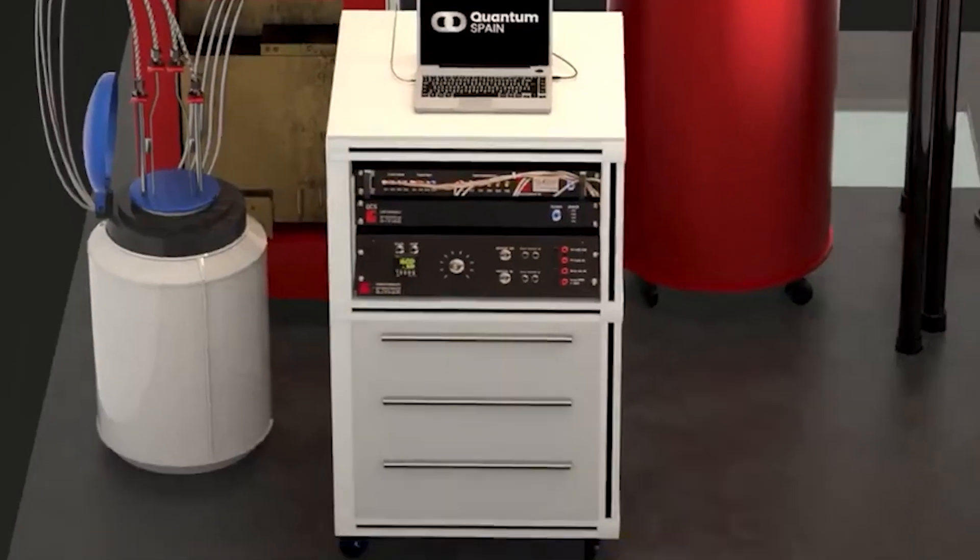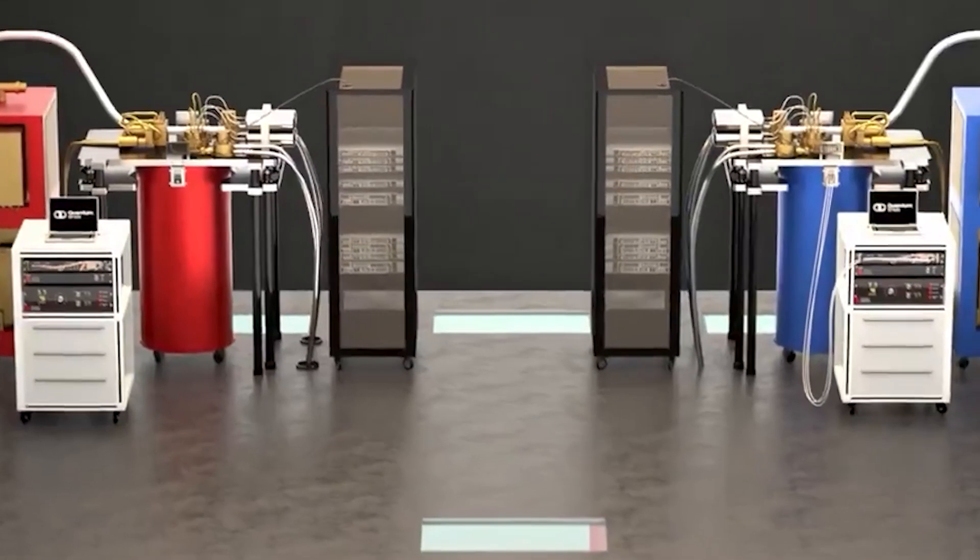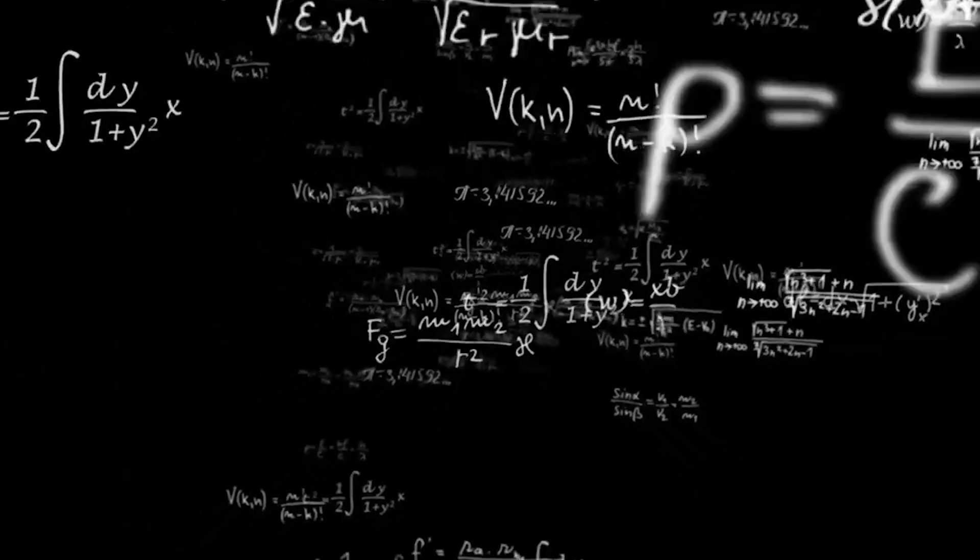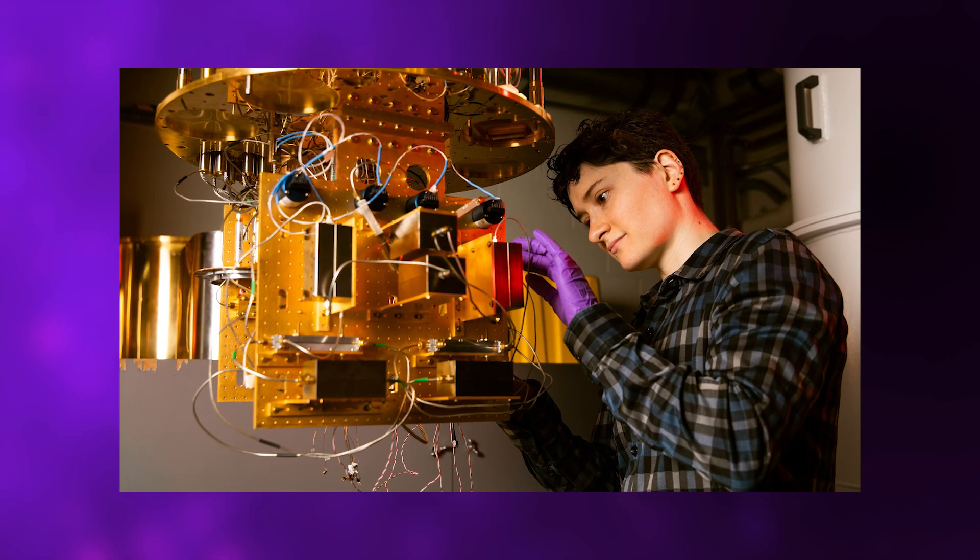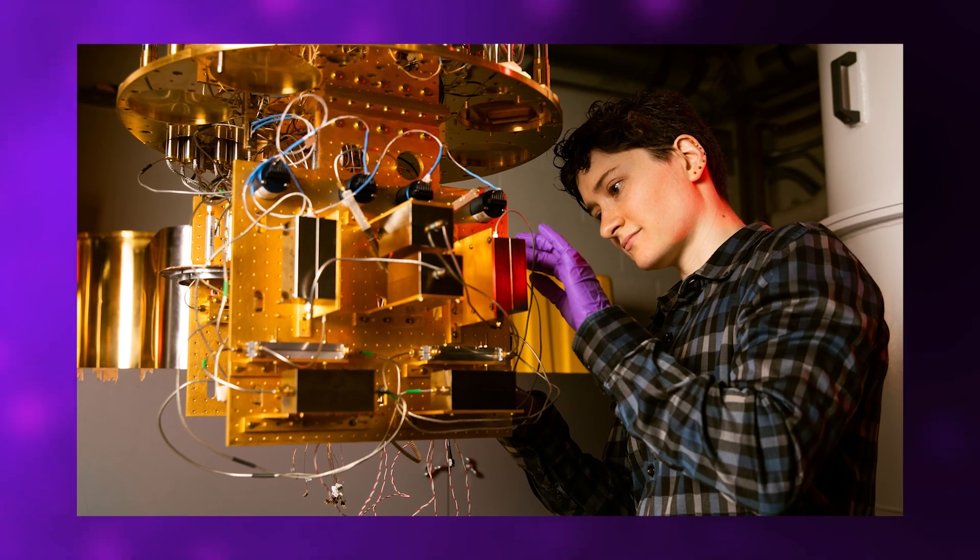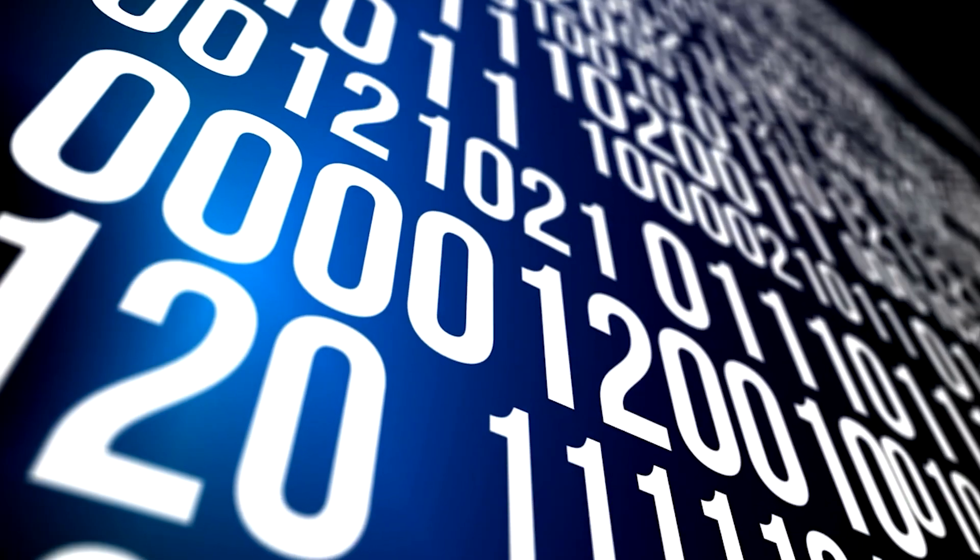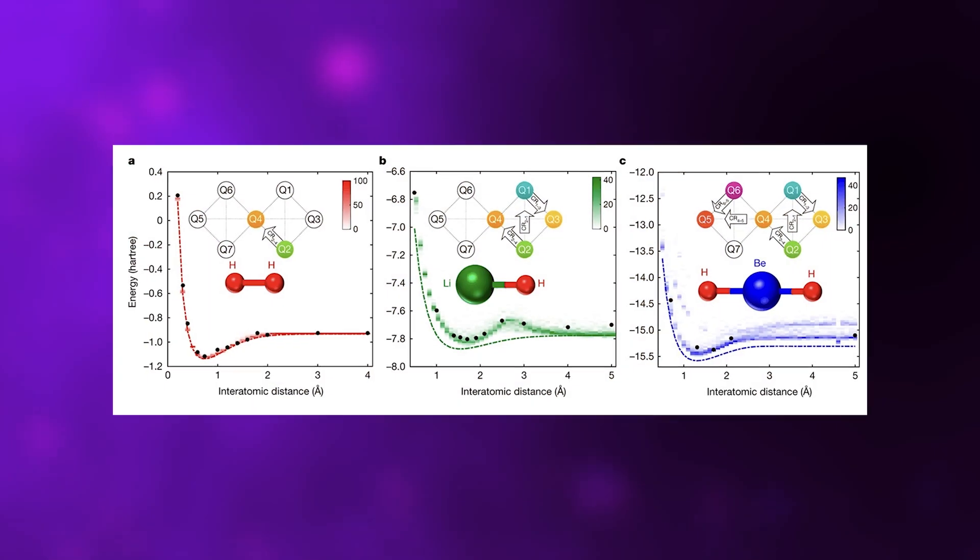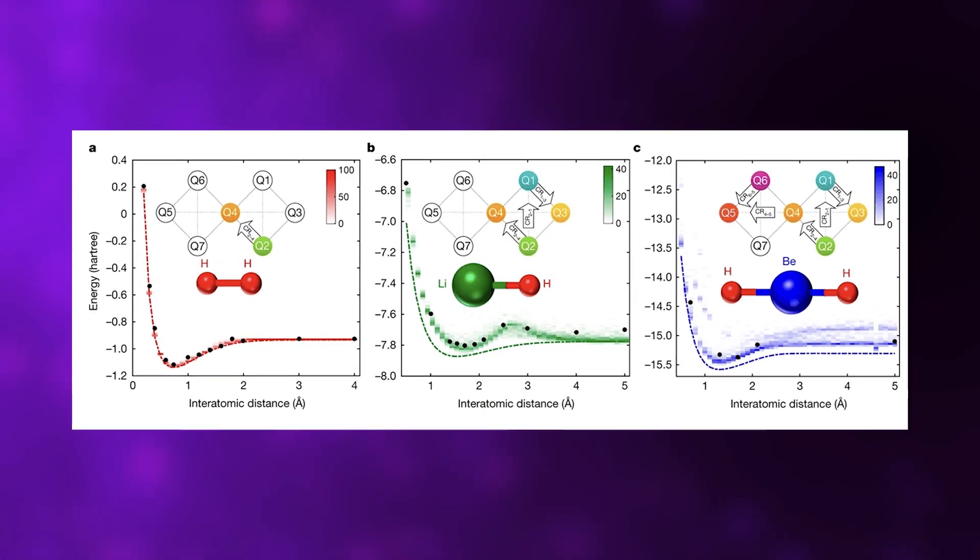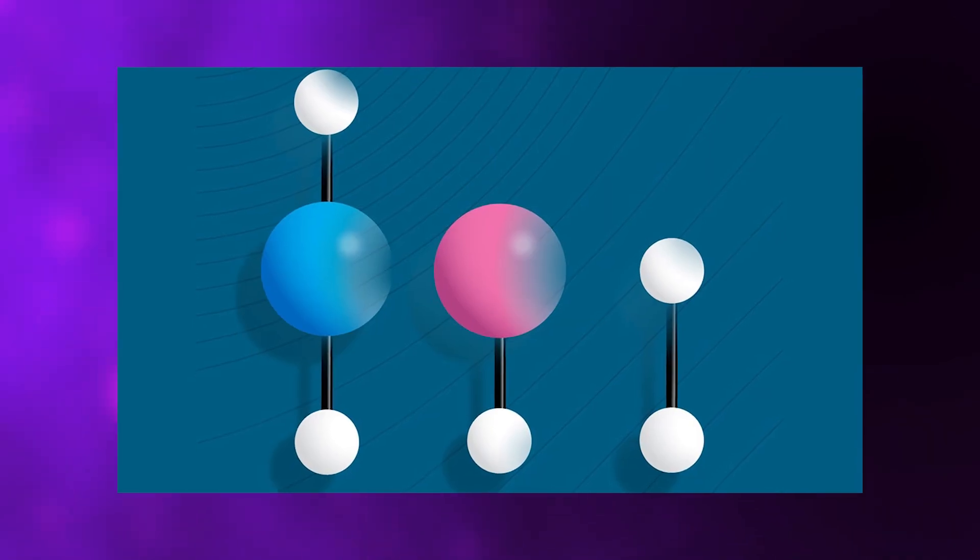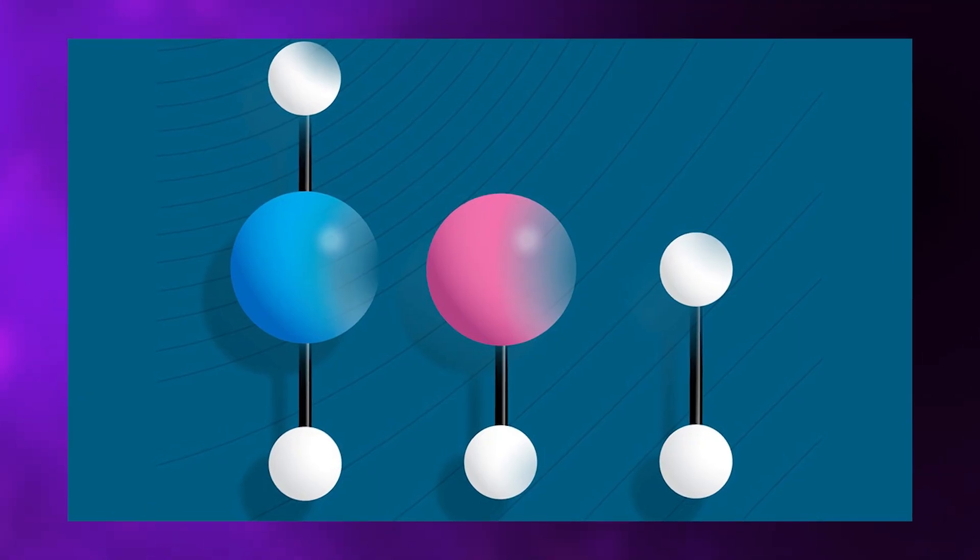Since then, IBM and Quantinuum have demonstrated smaller quantum advantages in chemistry simulations and optimization problems. Useful achievements but still firmly in the research-grade category. In early 2025, MIT Technology Review confirmed that no company has yet achieved consistent, practical quantum advantage outside carefully controlled laboratory environments. The most significant leap came when IBM simulated a lithium hydride molecule with accuracy classical methods genuinely couldn't match, but even that required hybrid computing support combining quantum and classical systems.